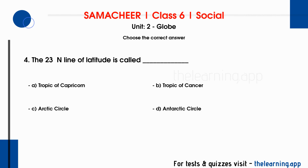Question 4: The 23N line of latitude is called dash. Options are A. Tropic of Capricorn, B. Tropic of Cancer, C. Arctic Circle, D. Antarctic Circle. Correct answer is B. Tropic of Cancer.